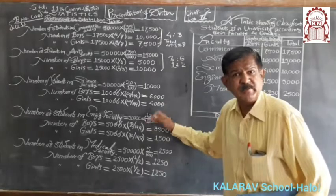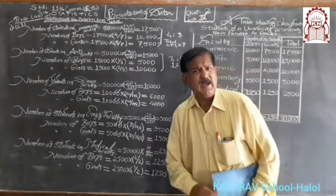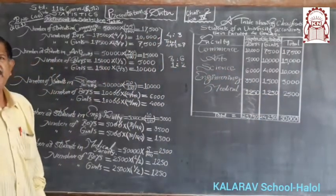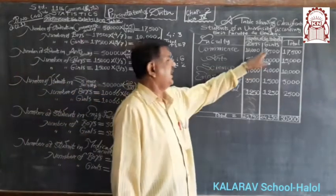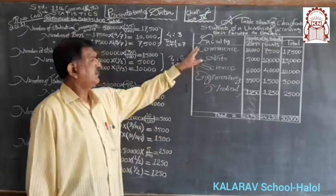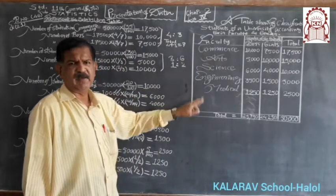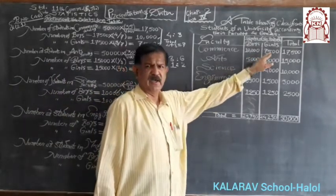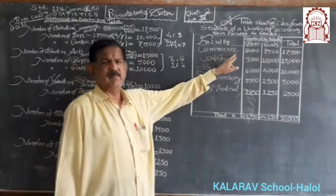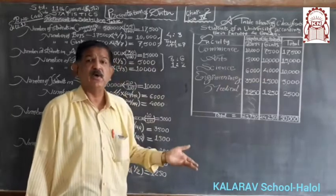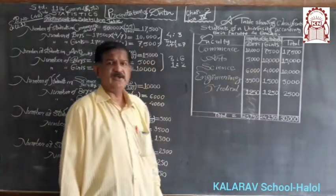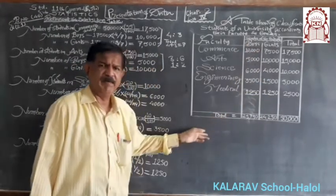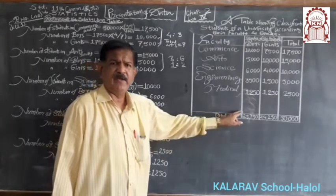This working calculation must be shown in the answer book. After completing this, prepare a proper table gender-wise and faculty-wise. In commerce: 10,000 boys and 7,500 girls. In arts: 5,000 boys and 10,000 girls. In science: 6,000 boys and 4,000 girls. In engineering: 3,500 boys and 1,500 girls. In medical: 1,250 boys and 1,250 girls.